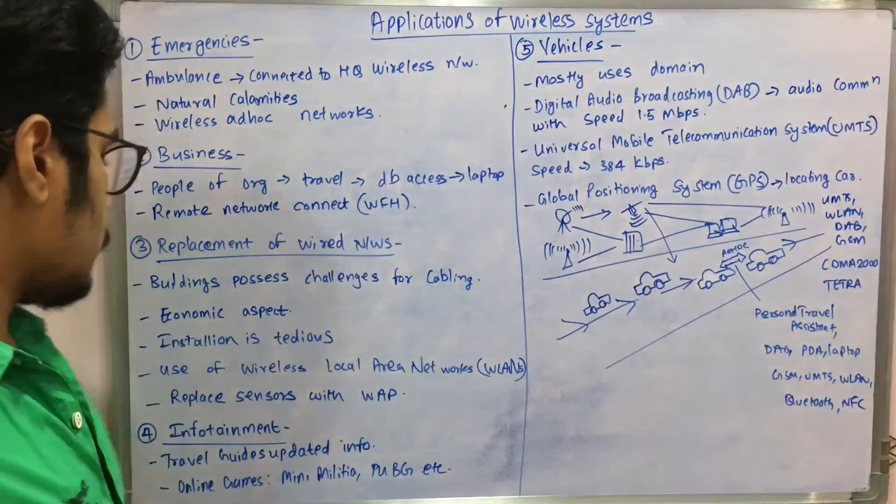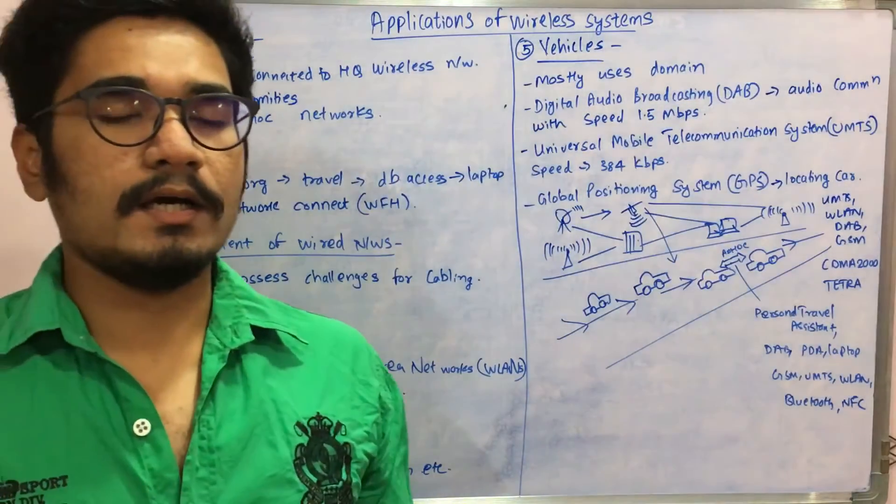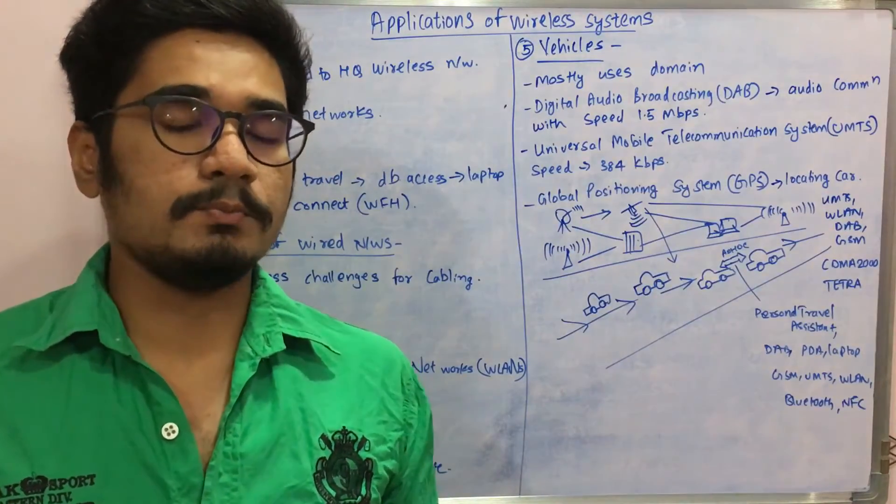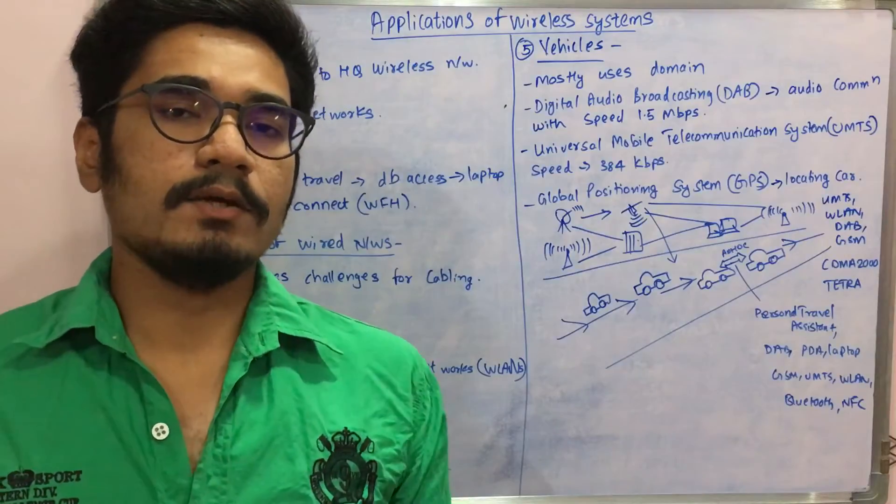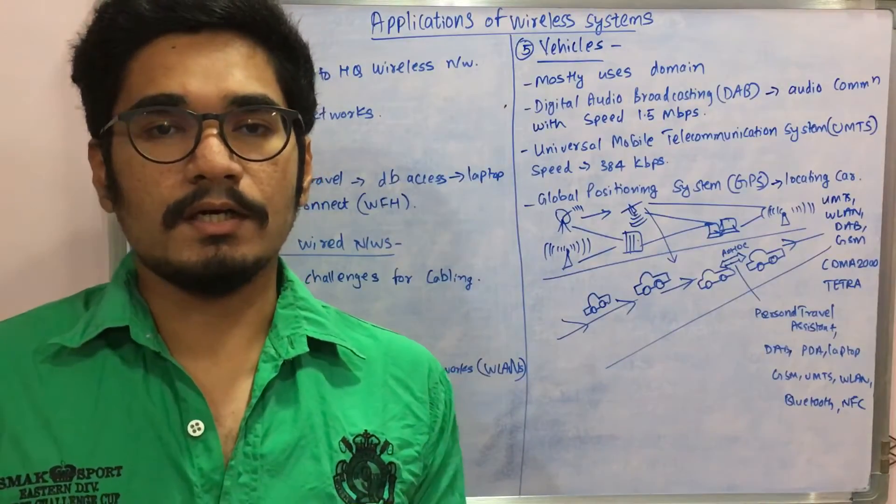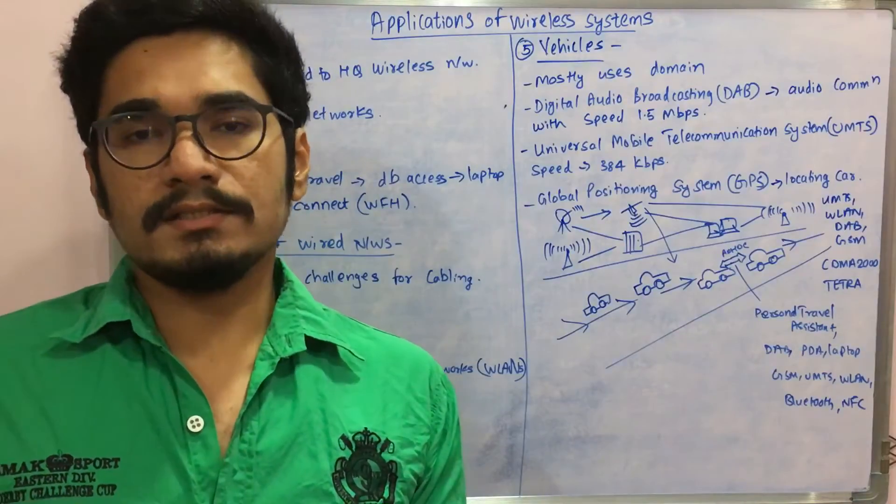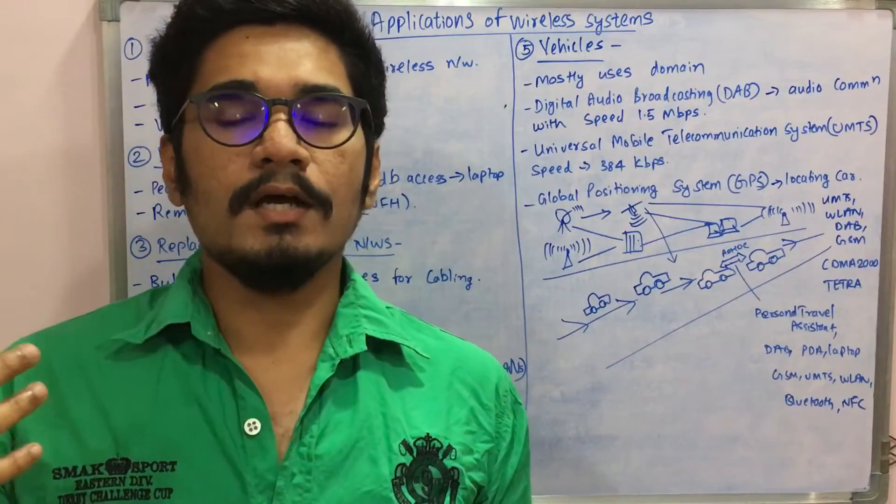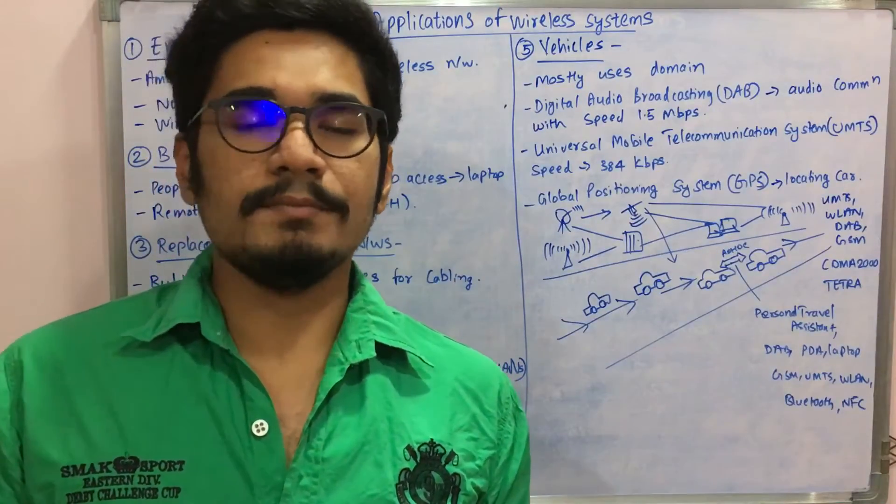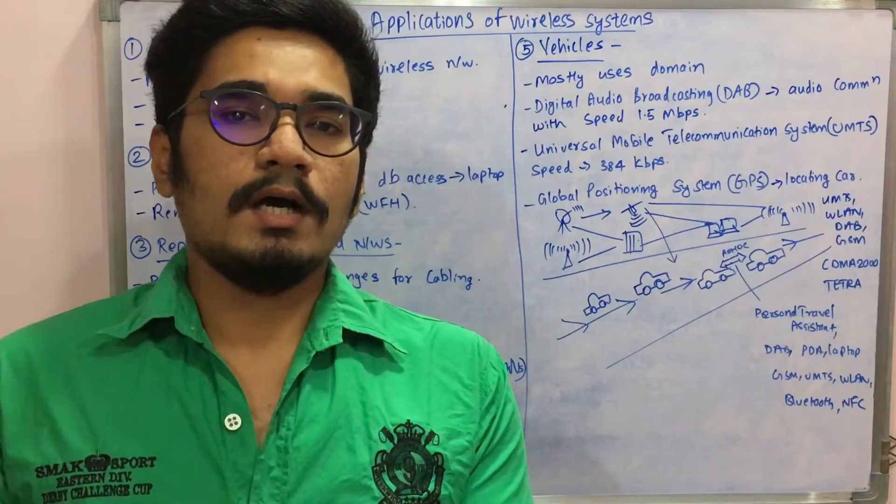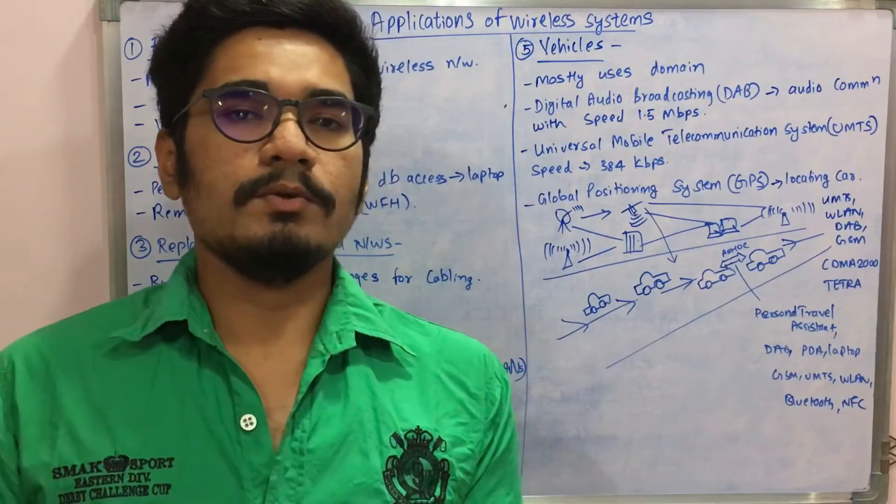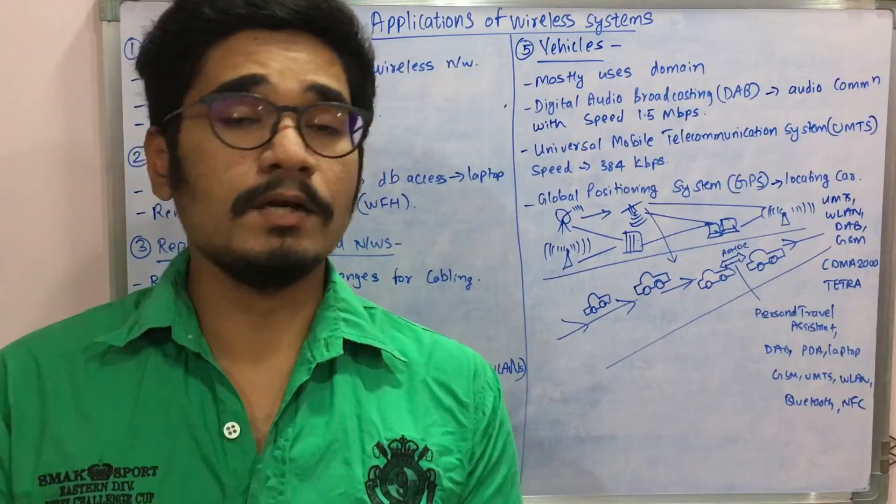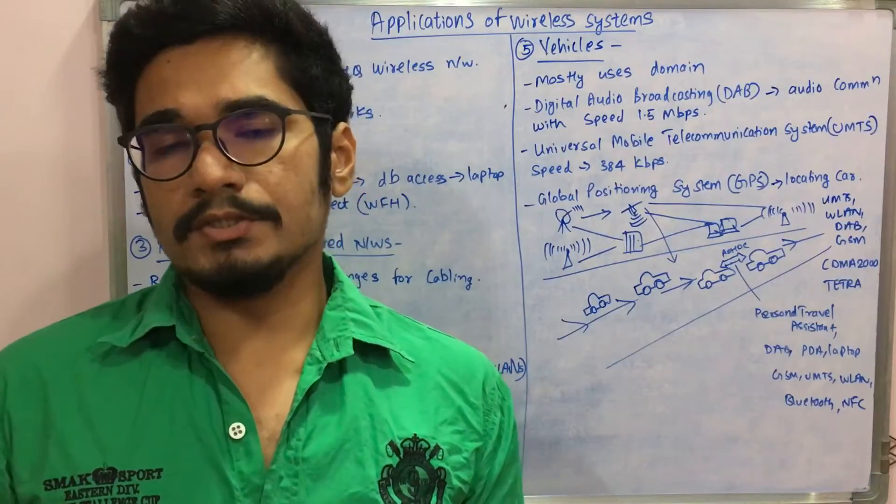Next, we have infotainment. Before the advent of wireless systems, 10 years ago when we used to travel to particular sites or locations, we had travel guides. The travel guide used to give information from CD-ROM or some book which hasn't been updated, giving only past information or historical data, not the current trends or renovations.